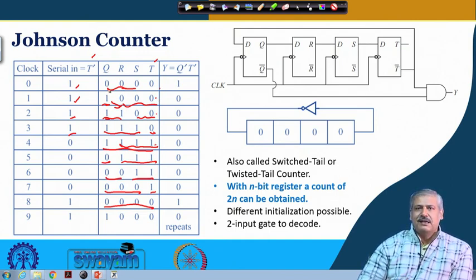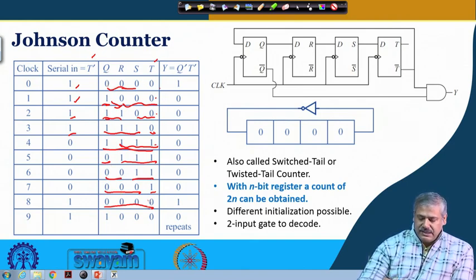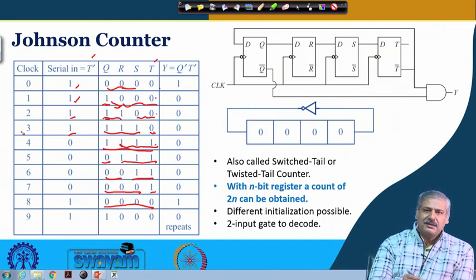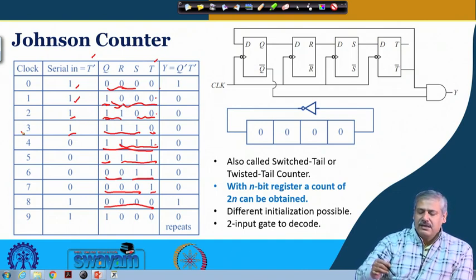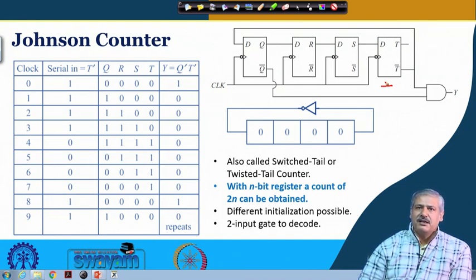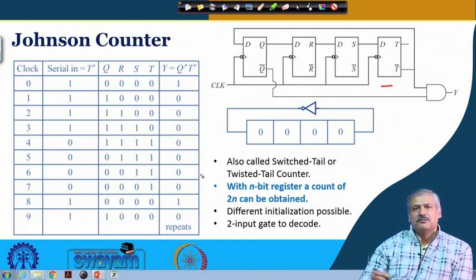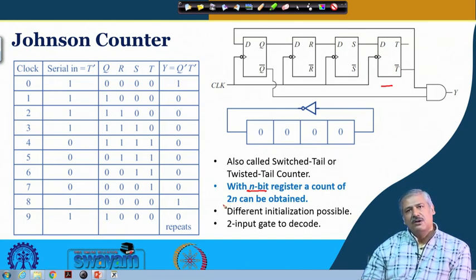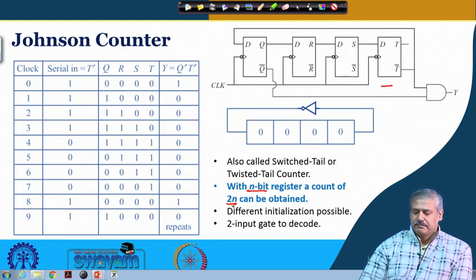The sequence state repeats after 8 clock pulses, so a 4-bit shift register in Johnson counter configuration gives a count of 8 — modulo 8. In general, with n flip-flops, the Johnson counter gives modulo 2n. So a 5-bit shift register gives modulo 10, and an 8-bit shift register gives modulo 16.